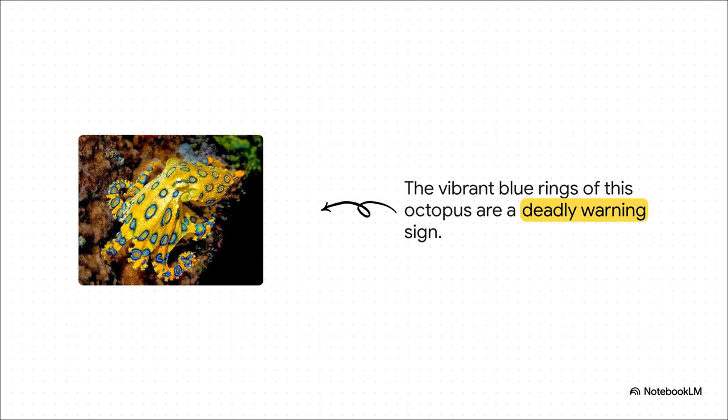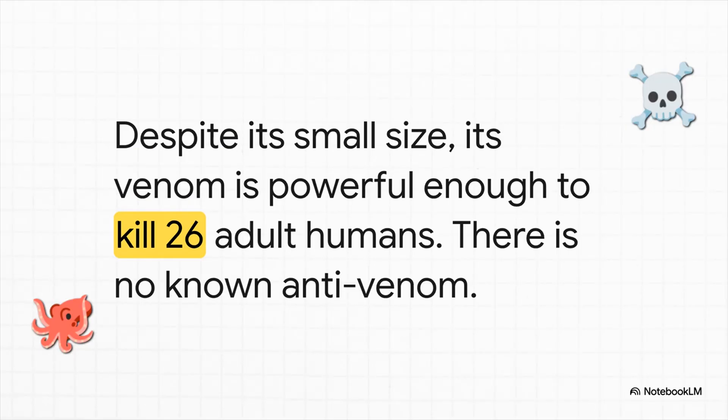And this evolutionary pressure cooker wasn't just on land. In the ocean, you get creatures like the beautiful but deadly blue-ringed octopus. It's tiny, often smaller than the palm of your hand. But those bright blue rings, they are not for show. They're a warning sign. And it's a warning you really want to listen to. This little guy carries enough venom to kill 26 adults. And get this. There is no anti-venom. It's just a stunning example of the contrast between size and power. A perfect product of its unique environment.